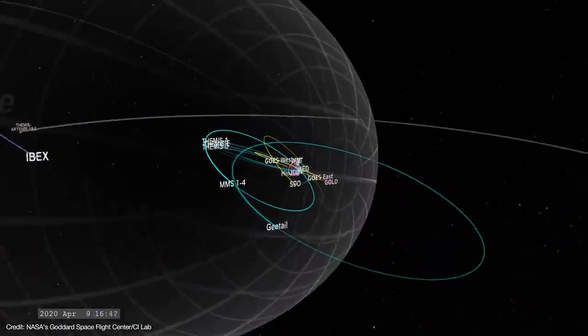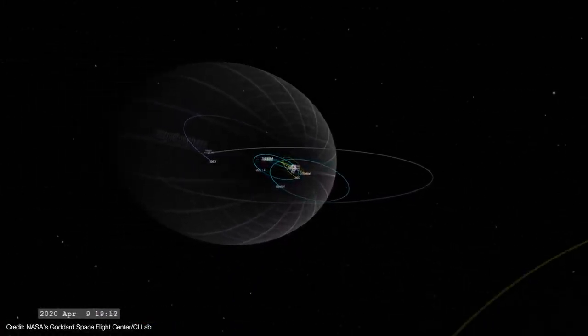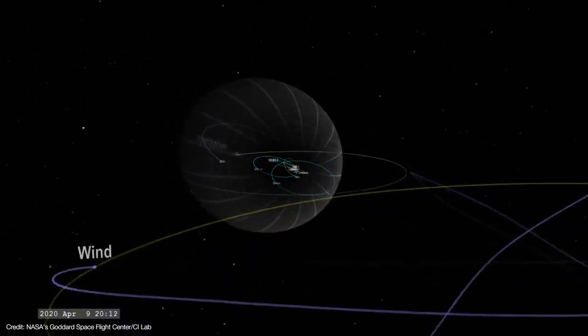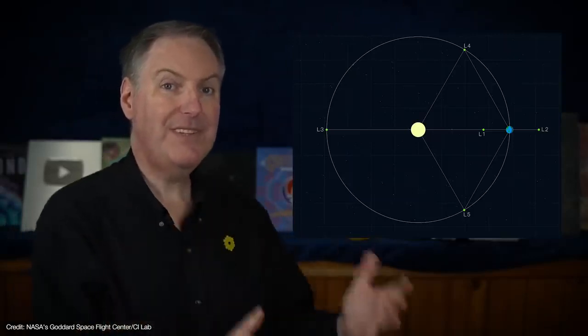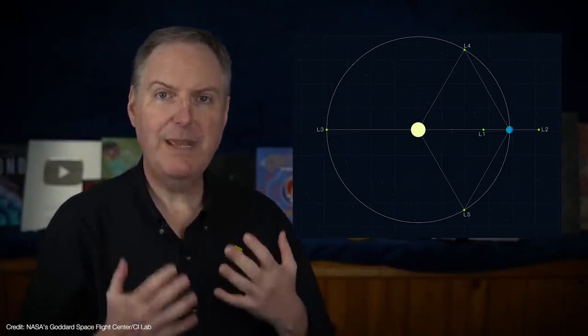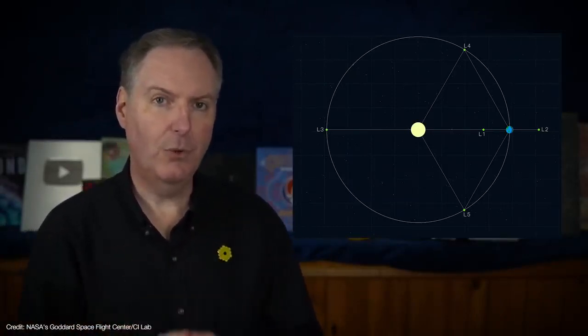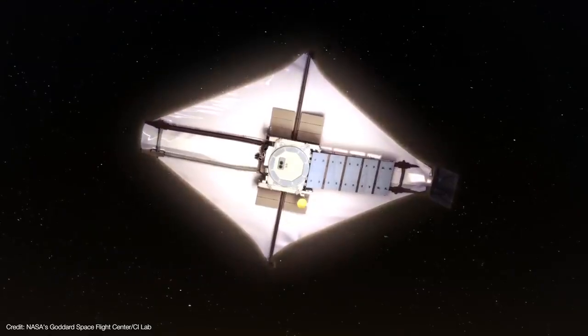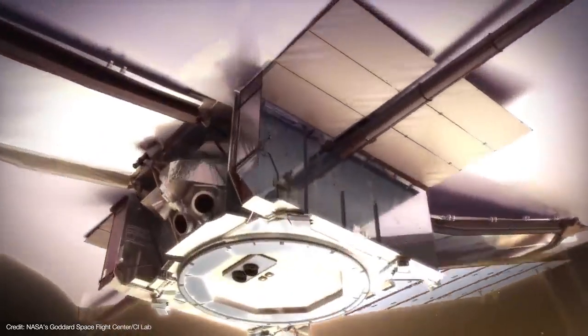And that's why the Sun-Earth L1 point is a great place to position sun-facing missions like the Solar Heliospheric Observatory and Earth-facing missions like DISCOVER. Likewise, L2 is the place to put astrophysics missions like Gaia and Webb. At both locations, spacecraft maintain a constant line-of-sight communication with Earth, even as Earth orbits the Sun. But L2 is particularly important for Webb because it can block the heat of the Sun, Earth, and Moon with a single sunshield.